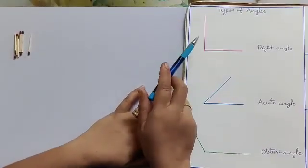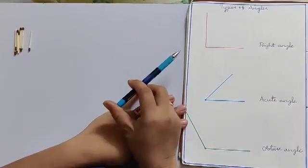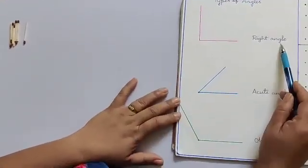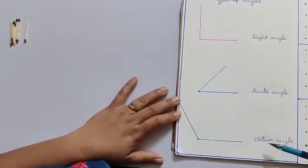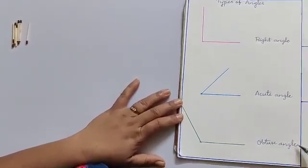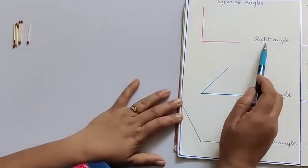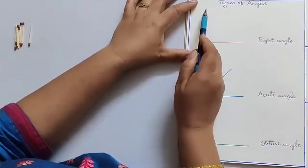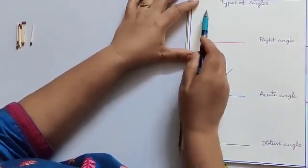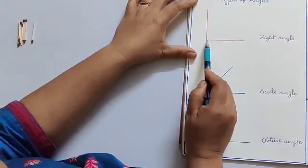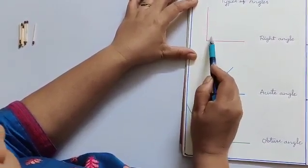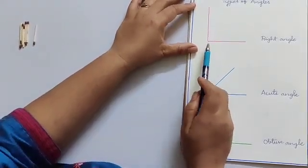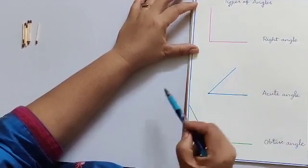Now, let's learn about the types of angles. There are three types of angles: a right angle, an acute angle, and an obtuse angle. What is a right angle? Children, look at this picture. Here, the two perpendicular lines are meeting at one point, and it makes 90 degrees with each other. Such type of angles are known as right angle.